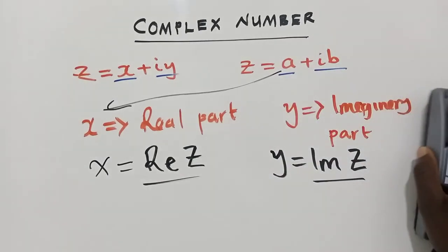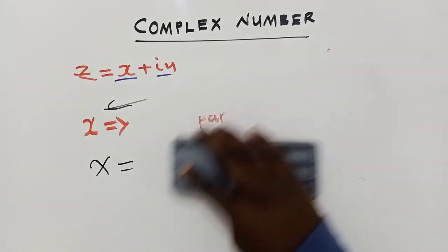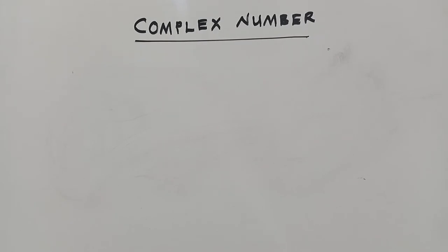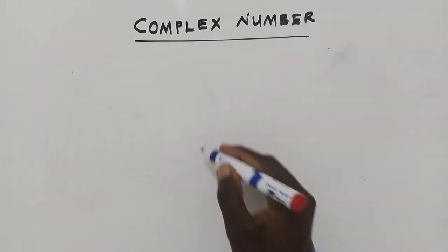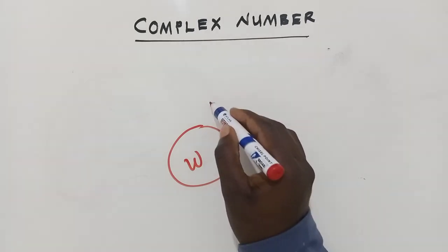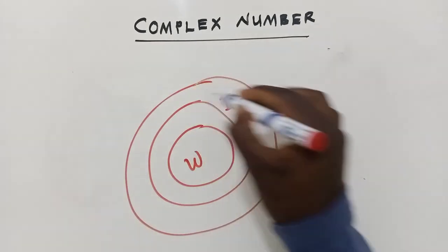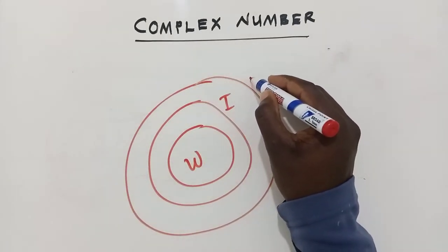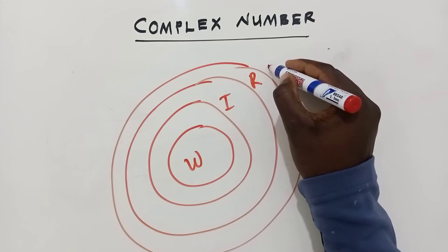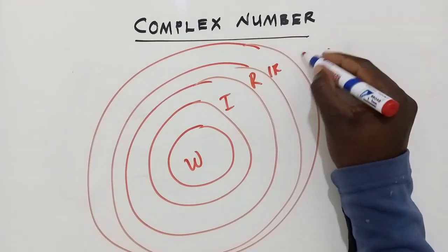So this is how you can define a complex number. Or let me try to use another explanation. So you know we have sets of numbers, different numbers. We have whole numbers. After whole numbers, we have integers. After integers, we have a set of rational numbers. After rational numbers, we've got irrational numbers. After irrational numbers, we've got complex numbers.